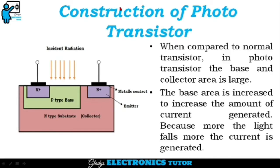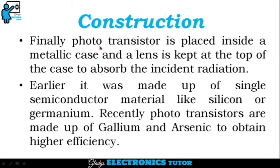Let's see about the construction of a phototransistor. When compared to the normal transistor, in a phototransistor, the base and collector area is large. The base area is increased to increase the amount of current generated, because the more light falls, the more current is generated. Finally, the phototransistor is placed inside a metallic case and a lens is kept at the top of the case to absorb the incident radiation.